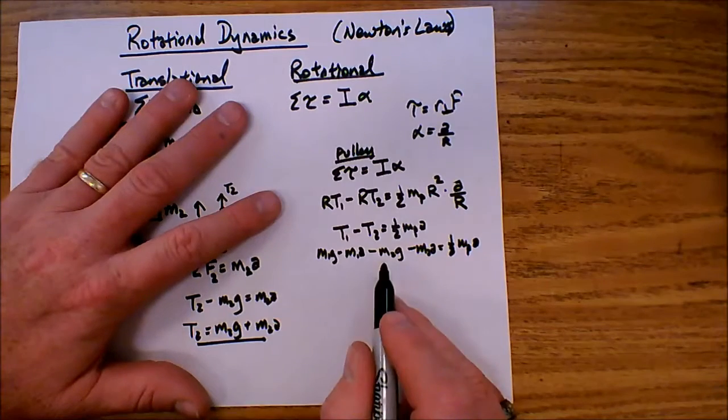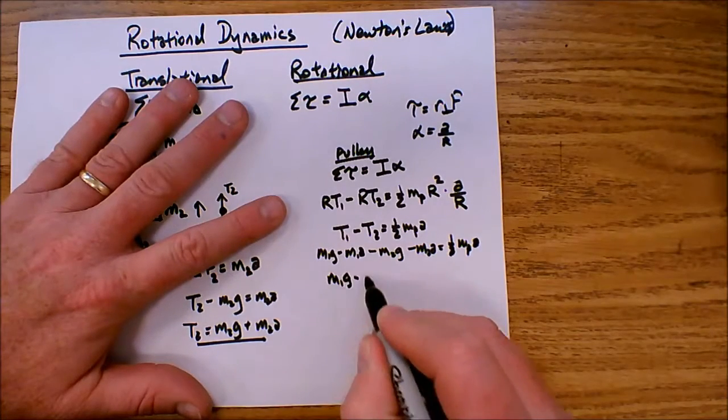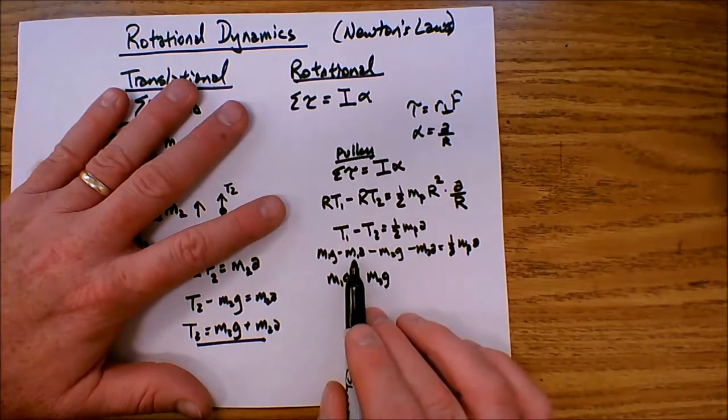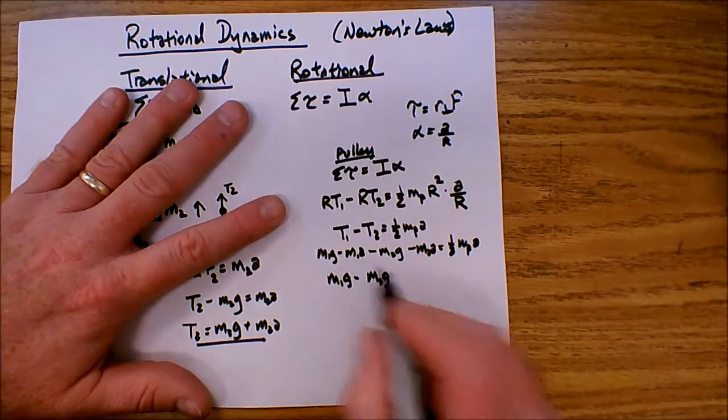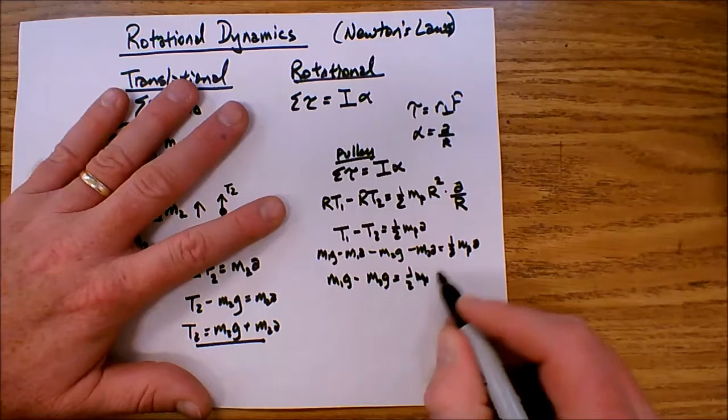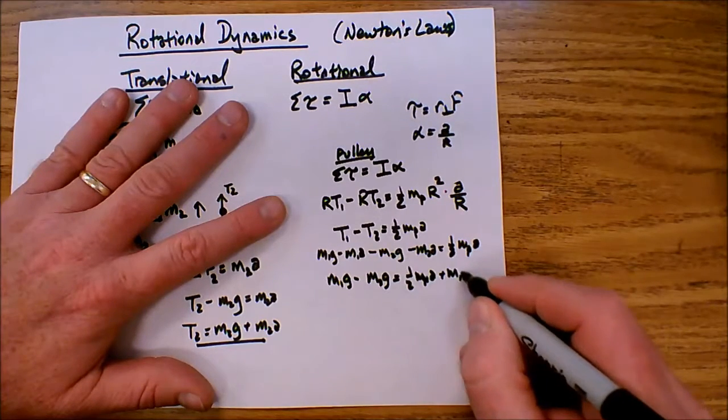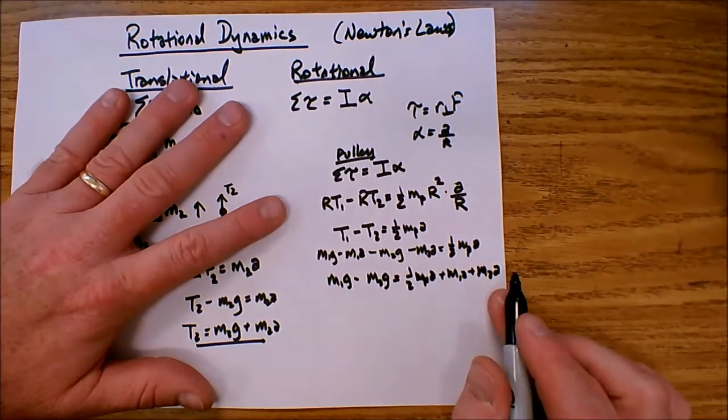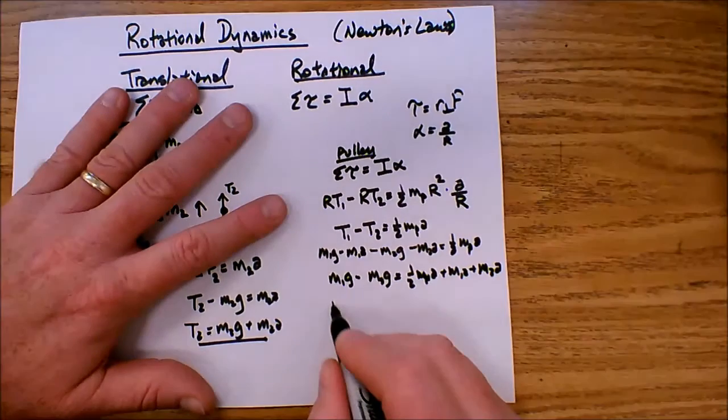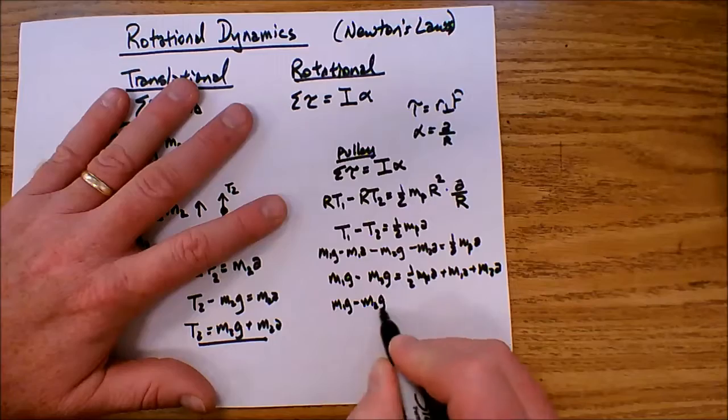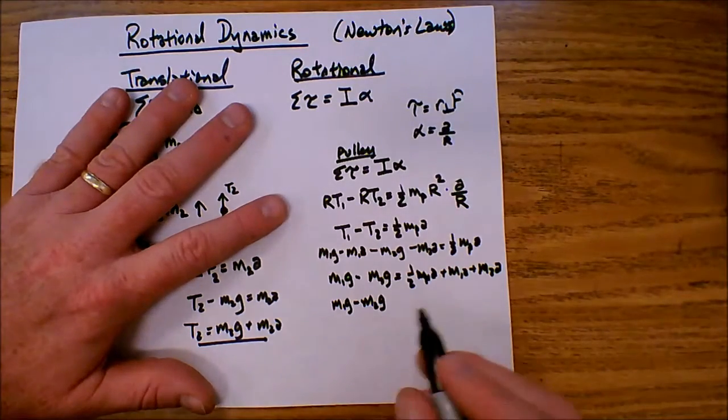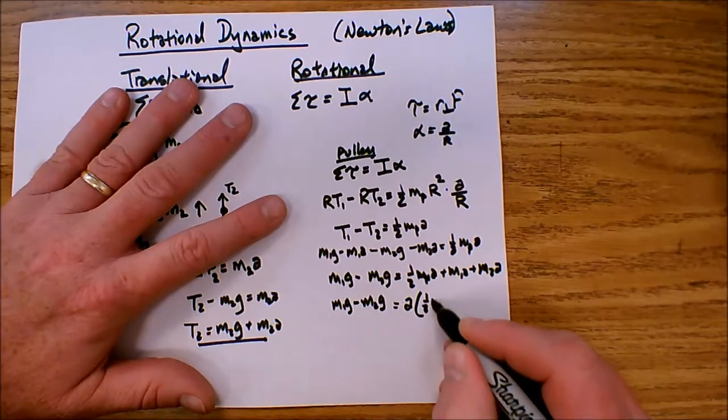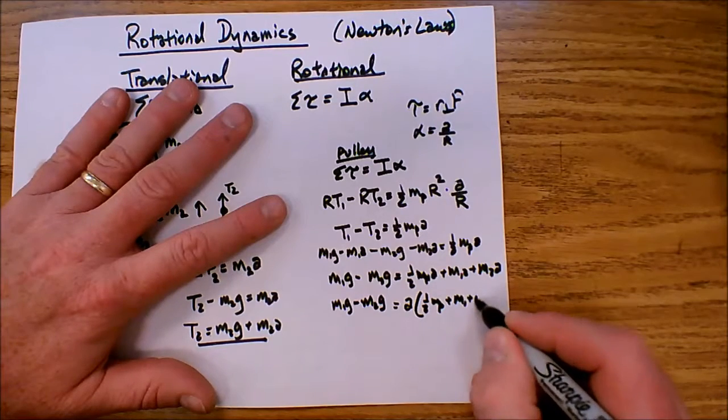So at this point, I can combine my like terms. I've got M1G minus M2G. And then I'm going to add everything with an A to get it over to this side. So I've got one half mass of the pulley times A, plus I've added M1A to both sides, and I have added M2A to get it over here as well. I'm going to get all my A's together on the same side and everything else on the other. So at this point, I've got M1G minus M2G, and you can factor that out and call it M1 minus M2 quantity times G. Here, I'm going to factor out the A, and I have one half mass of the pulley plus M1 plus M2.